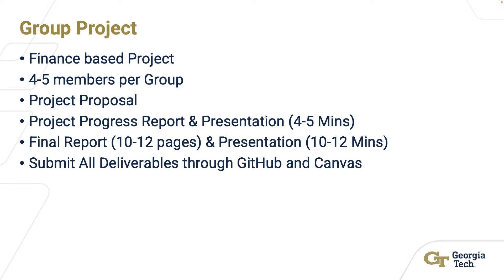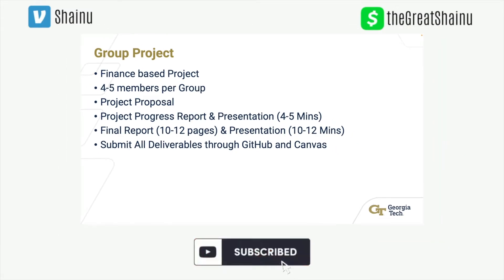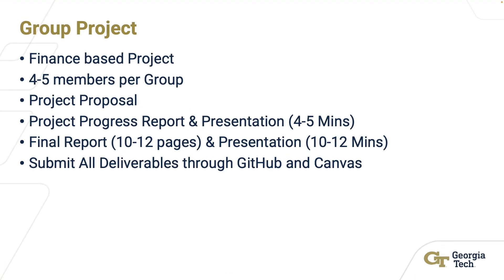Once you form your group, your deliverables include a project proposal of about one to two pages, a project progress report, and a presentation of four to five minutes done by one person. Then you have a final report of 10 to 12 pages — our group's was about 24 pages. There's also a final presentation of 10 to 12 minutes where every member must present. You submit all deliverables through Canvas and GitHub, so the TA can review version history and contributions if someone reports a teammate isn't doing their work.